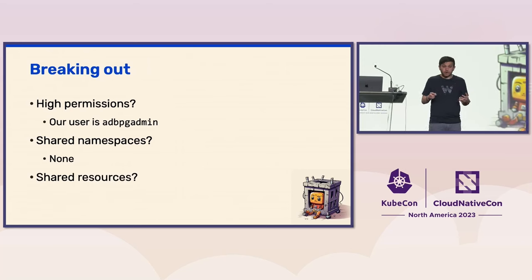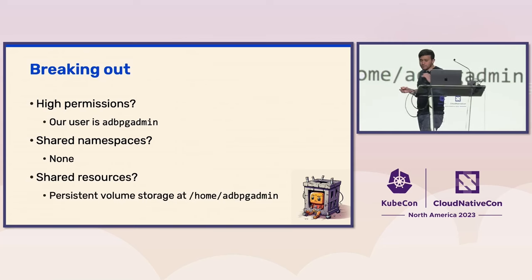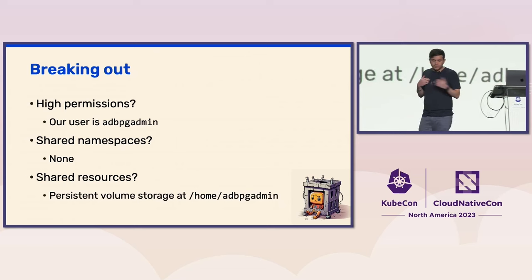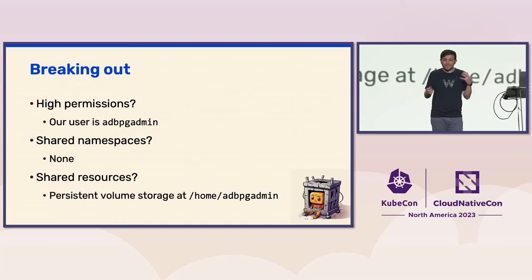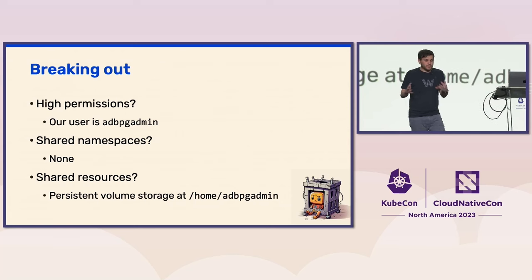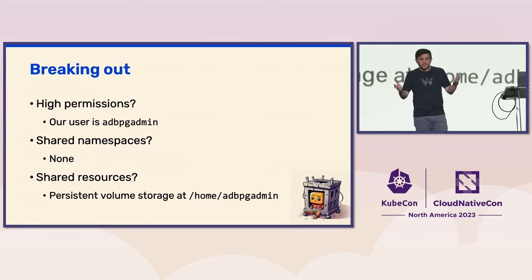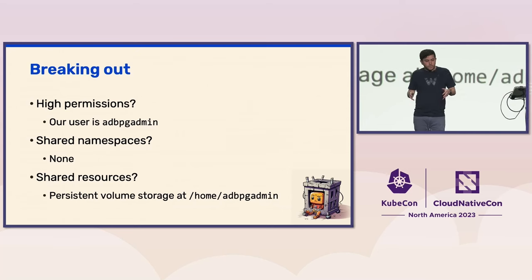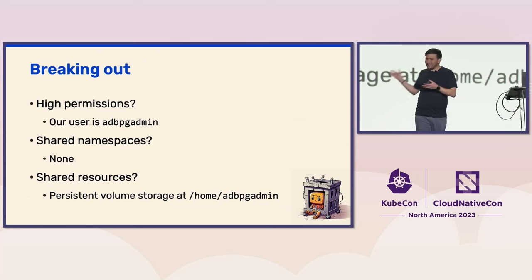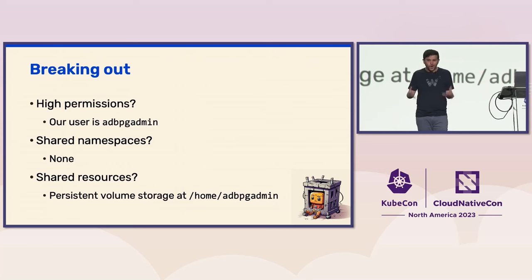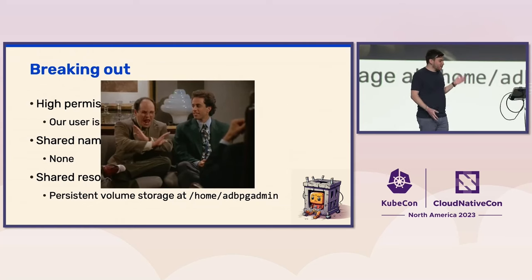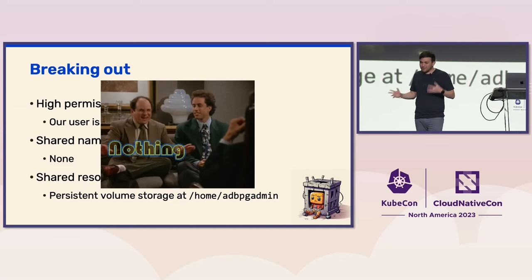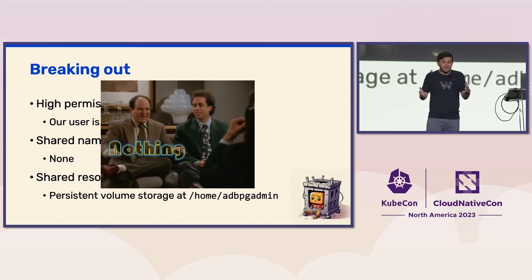Another thing we look for is shared resources. In this case, we found a persistent volume storage which was our home directory, slash home slash adbpgadmin. This was the first potentially interesting finding, but it wasn't that interesting — it mostly contained the PostgreSQL data, our own database data, which had to be persistent because that's the service. So at this point we took a hard look at what we had: a weak user, no shared namespaces, and only one persistent volume we couldn't do much with. We really had nothing on our hands at this point.